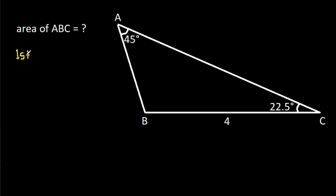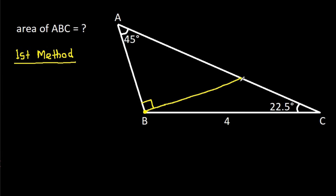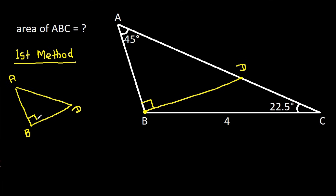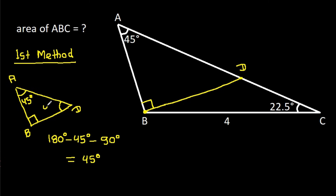For the first method, from point B, if we make a perpendicular on AB, suppose this point is D, then in triangle ABD, the angle at D is 90 degrees and this angle is 45 degrees. So this angle will be 180 minus 45 minus 90, that will be 45 degrees.